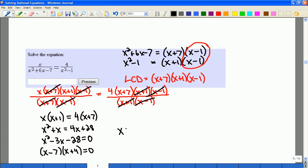So the possible solutions I have are x equals 7 or negative 4. Now, if we go back and look, we have to make sure we didn't divide by zero, that these solutions are in fact in the domain.